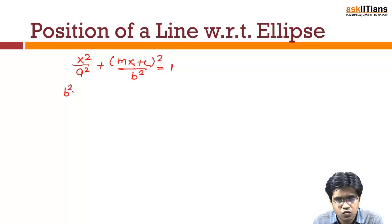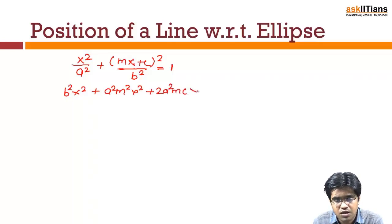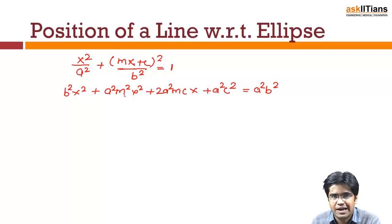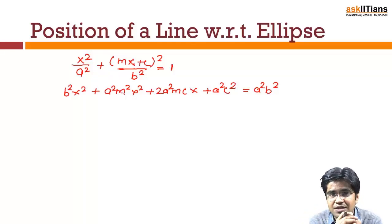Taking the LCM and simplifying, I get b²x² + a²m²x² + 2a²mcx + a²c² = a²b². I have just taken the LCM, opened the square, and simplified. I can clearly see that this equation is a quadratic in x. Being a quadratic in x means that whatever number of solutions this equation gives us, those are the possible values of x.